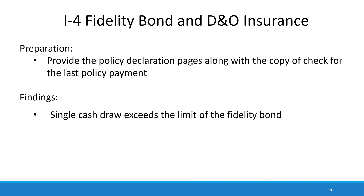Moving on to Fidelity Bond and Directors and Officers Insurance. We ask that you provide the current policy declaration pages along with a copy of the check made for the last policy payment. One thing we find is that single cash draws exceed the limit of the Fidelity Bond — for example, if your bonding insurance is $100,000, any single cash draws should not exceed $100,000.